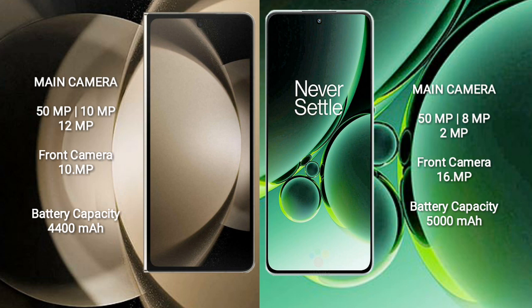Samsung Galaxy Z Fold 5 features a rear triple camera setup: 50MP plus 10MP plus 12MP, and a front camera of 10MP. OnePlus Nord 3 also has a rear triple camera setup: 50MP plus 8MP plus 2MP, and a front camera of 16MP.